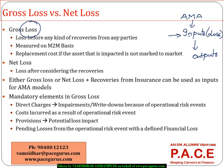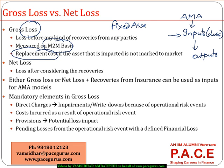Before the recoveries of any sort, whatever is the actual loss that is incurred is what we call the gross loss. In general, if that asset is a mark-to-market asset, we directly find out the gross loss on a mark-to-market basis. But if that asset is not mark-to-market — probably some kind of loan or something which is not marked to market on a daily basis — then we may even look at the replacement cost. If that asset is a fixed asset which may not be mark-to-market on a daily basis, then we look at replacement cost as a measure of the gross loss.